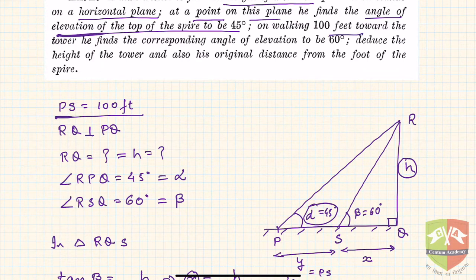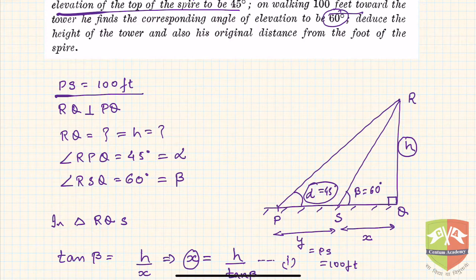As you go towards the church, the angle of elevation will increase. Hence it is observed that now at point S, which is around 100 feet away from P, the angle of elevation has become 60 degrees. Now you have to find out the height of the tower and also his original distance from the foot of the spire.